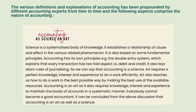Accounting as science or art: science is a systematized body of knowledge that establishes a relationship of cause and effect and is based on fundamental principles. Accounting has its own principles — the double-entry system — which explains that every transaction has a two-fold aspect, such as debit and credit. It also lays down rules of journalizing, so we can say accounting is a science. Art requires perfect knowledge, interest, and experience to do work efficiently. Accounting is an art as it also requires knowledge, interest, and experience to maintain books of accounts in a systematic manner.